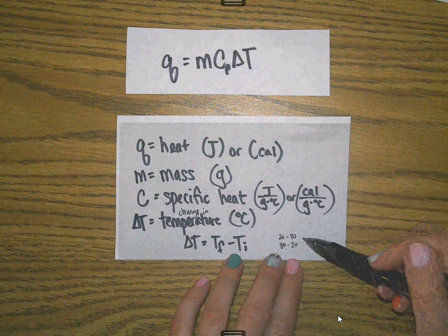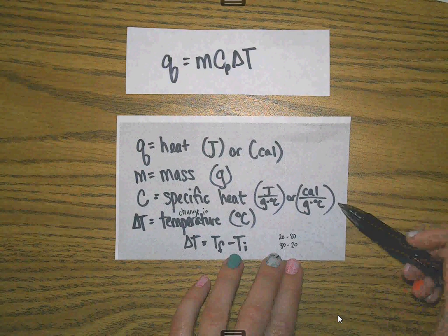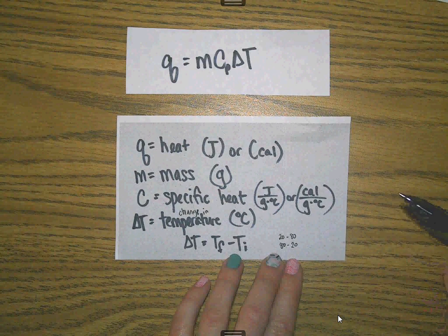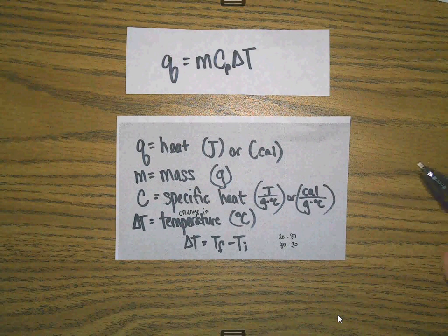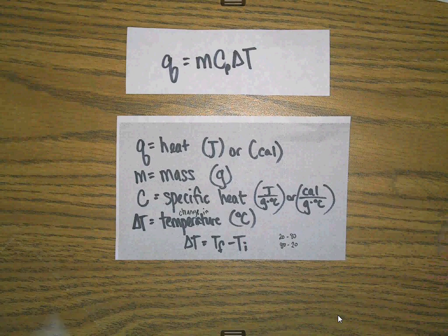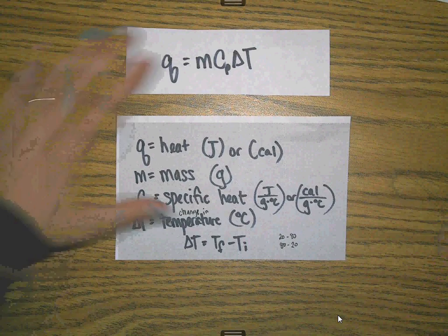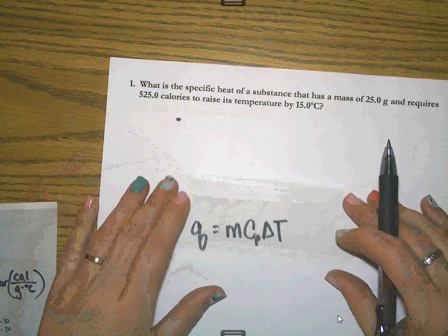If something is cooling down, then it would make sense that you would end up with a negative number because it's giving off heat. Whereas if it's warming up, you should end up with a positive number because it's going to be gaining heat. The problems that I'm going to work in this video are just very simple thermochemical calculations.